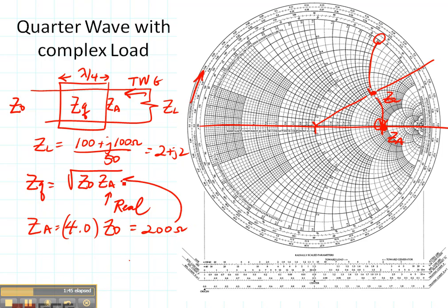That's what we plug in right here. 50 ohms is what we plug in for Z0. This tells us the characteristic impedance of our quarter wave transformer.